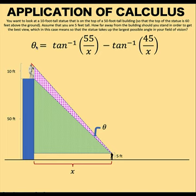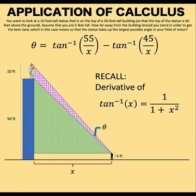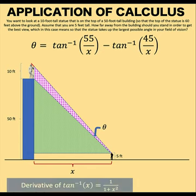So therefore, if we want to maximize this angle, we can use the first derivative of theta. Now, let's recall that the derivative of inverse tangent of x is equal to 1 over 1 plus x squared. And we are going to use this in order to compute for the derivative of this equation.